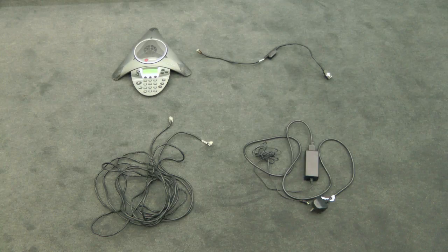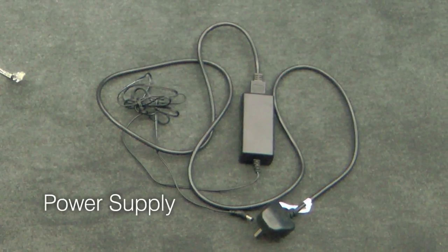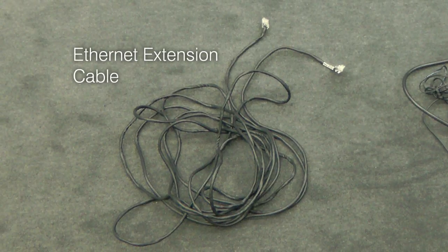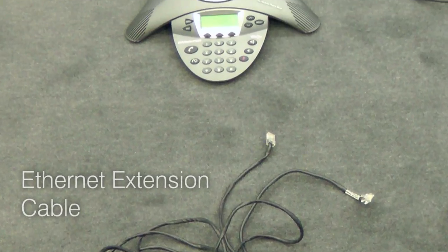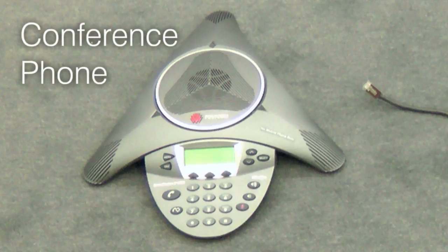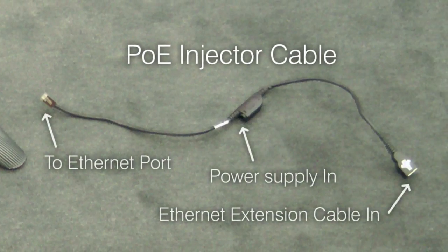First of all we have the power supply — this supplies the power to the phone. Secondly we've got the Ethernet extension cable; this is a very long cable and lets you place the phone anywhere on the table. Thirdly we've got the phone itself, integral to conference phoning. Last but not least you've got the POE injector cable. What this does is it takes the power from the power supply and injects it into the Ethernet cable, which allows you to have the conference phone running off just one cable.